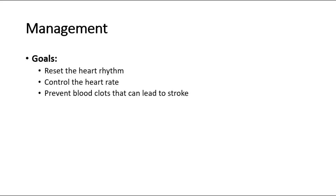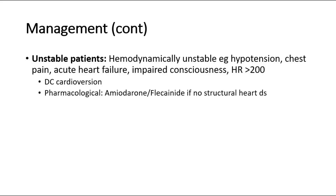For unstable patients, such as those who are hemodynamically unstable with hypotension, chest pain, acute heart failure, impaired consciousness, or heart rate more than 200, management is to perform DC cardioversion and pharmacological treatment such as amiodarone and flecainide for rhythm control.